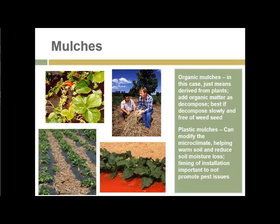Another method of adding or rebuilding soil nutrients and holding in soil moisture is the use of mulches. Any material derived from plants adds organic matter to the soil as it decomposes and holds in soil moisture — it's best if the mulch decomposes slowly and is free of weed seed. Increasingly, plastic mulches are also being used to modify soil conditions under plants: they help to warm the soil and reduce loss of soil moisture, and the timing of installation is important in order to avoid promoting pests under the mulch.